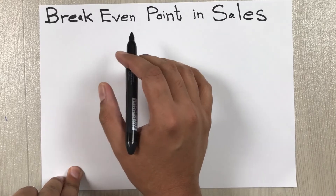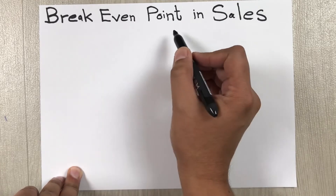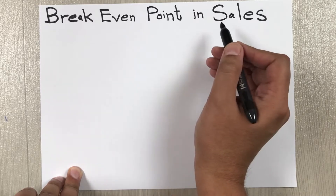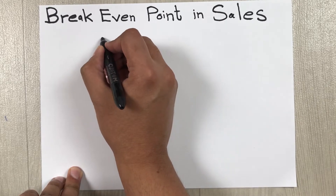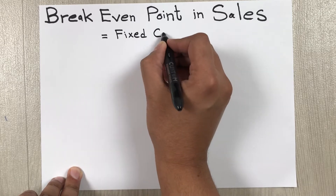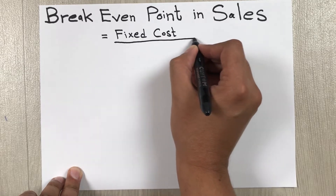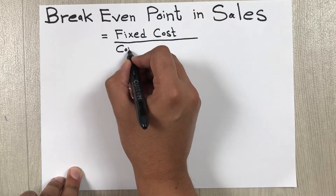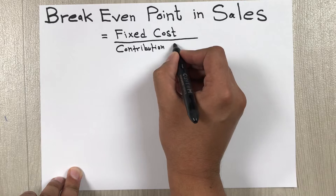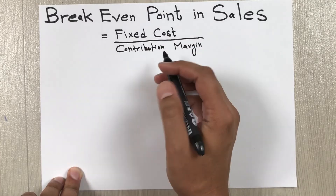Hello guys, I hope you are doing really well. In today's video I am going to show you how to calculate break-even point in sales. The formula to find the break-even point in sales is equal to fixed cost divided by contribution margin.